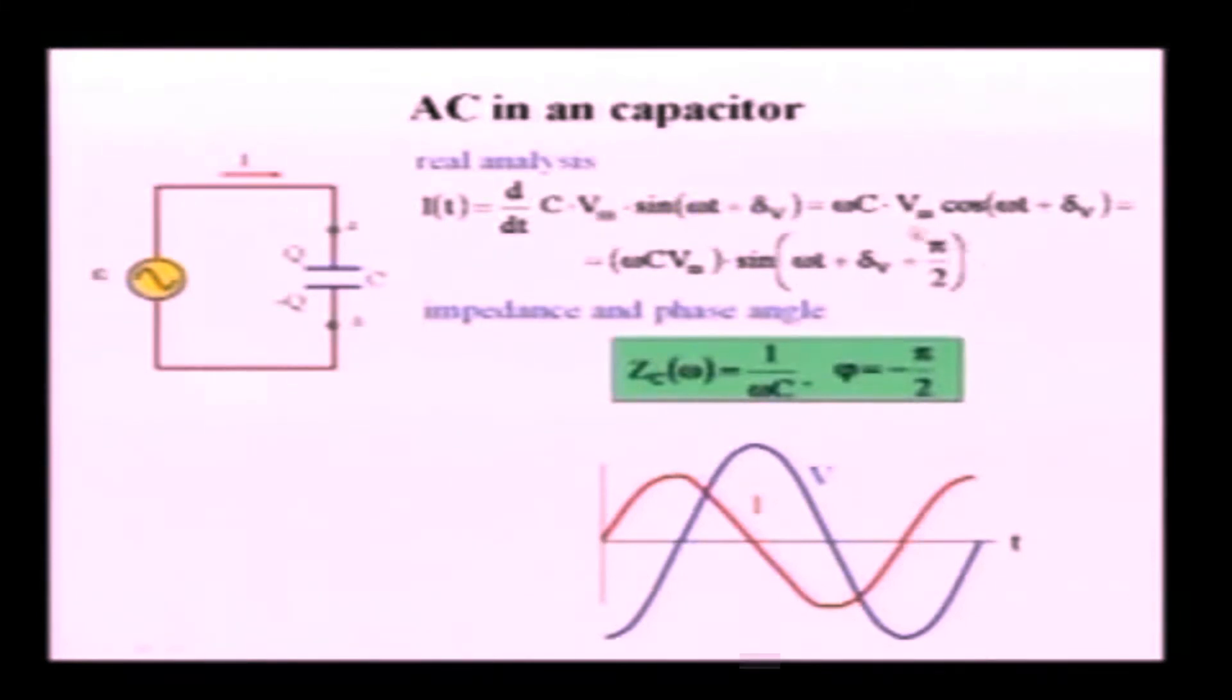Now, this number over here represents the initial phase of the current. So, I see that initial phase of the current is equal to initial phase of the voltage plus pi over 2. What's the phase angle? Now, make sure that you do not confuse what to subtract from what. So, from the initial phase of the voltage, from delta V, we have to subtract initial phase of the current.